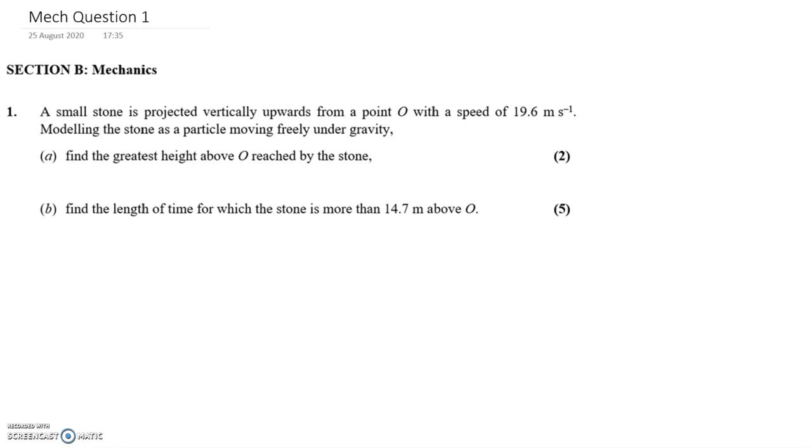So here we have a vertical motion question. You have a small stone being thrown upwards with an initial speed of 19.6 meters per second. So it will travel upwards and then come back down. You have to find the greatest height above the point it was thrown that it gets to.